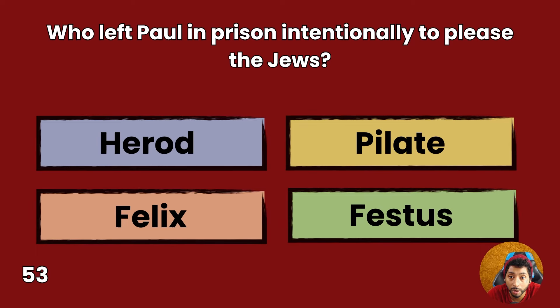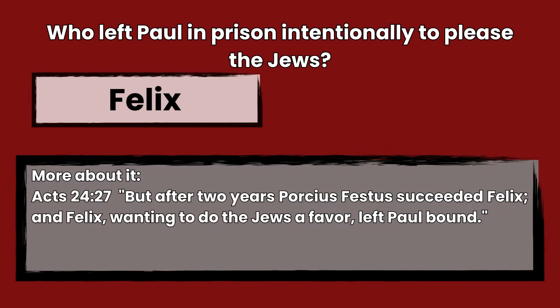Question 53: Who left Paul in prison intentionally to please the Jews? Herod, Pilate, Felix, or Festus? Answer: Felix. Acts 24:27 — But after two years, Porcius Festus succeeded Felix, and Felix wanting to do the Jews a favor, left Paul bound.